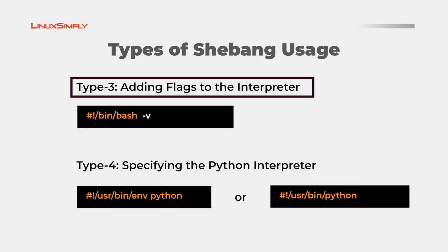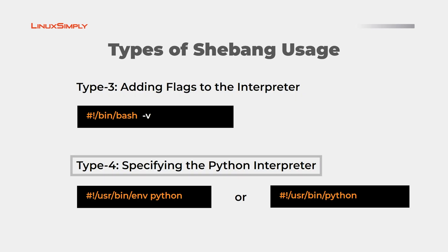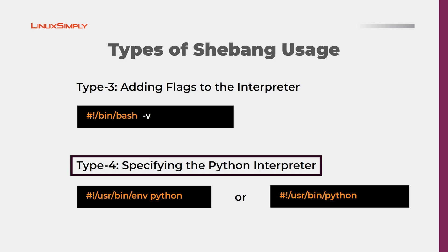Type 3 is adding flags to the interpreter. If you want to print the shell input lines as they are read, you can use the -v flag. Lastly, Type 4 is specifying the Python interpreter. If you want to use the Python interpreter to run Python scripts, you can use either one of the following shebangs.